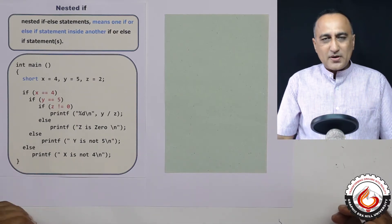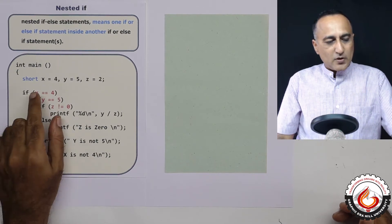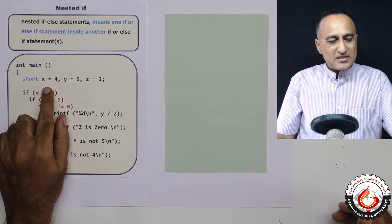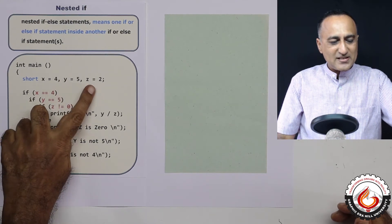The best way to understand this is to take a look at a piece of code. So I have declared short variables x, y, and z. x is 4, y is 5, and z is 2.